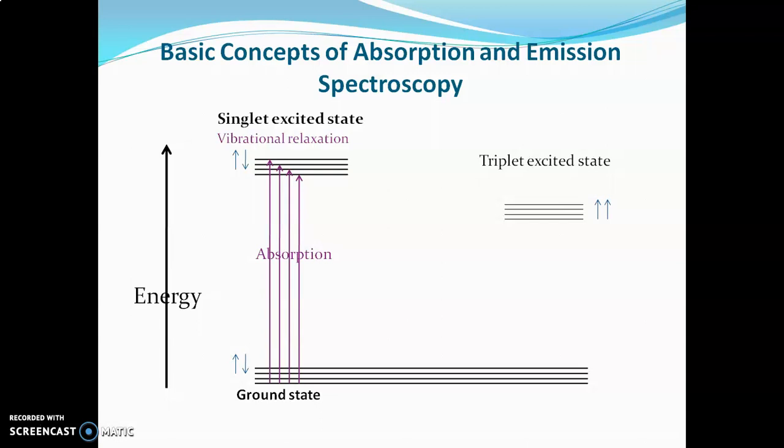The singlet excited state is an unstable state, and electrons will not remain there forever. They will try to lose their absorbed energy and come back to their normal stable ground state. The electrons lose their energy in the form of heat, and that's why when we put a cuvette in the UV-visible spectrophotometer for measurement, the cuvette becomes warm. This is UV-visible absorption spectroscopy.